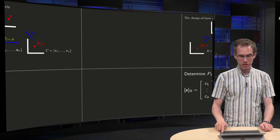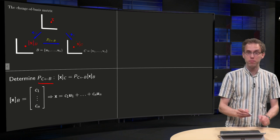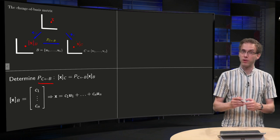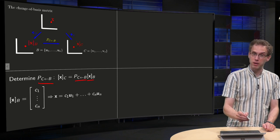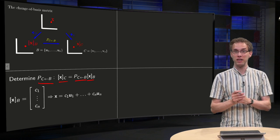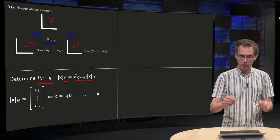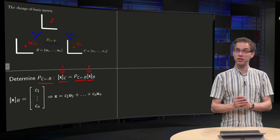So what's the trick? We want to determine some matrix P from B to C. That is the trick, so that converts x_B via the matrix P_{C←B} into an x_C. So how can we find this matrix? Notice it's just some normal matrix, because these two are normal vectors in R^n.